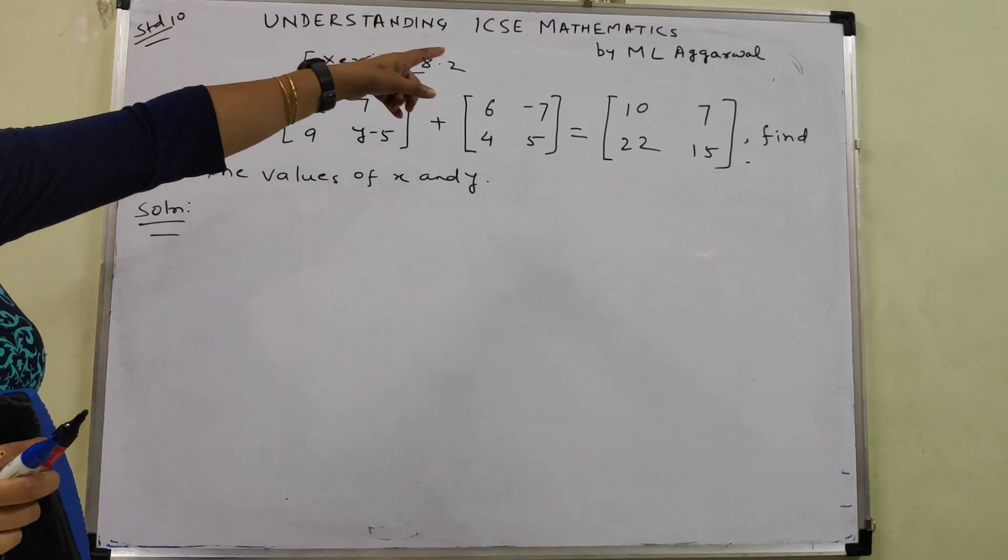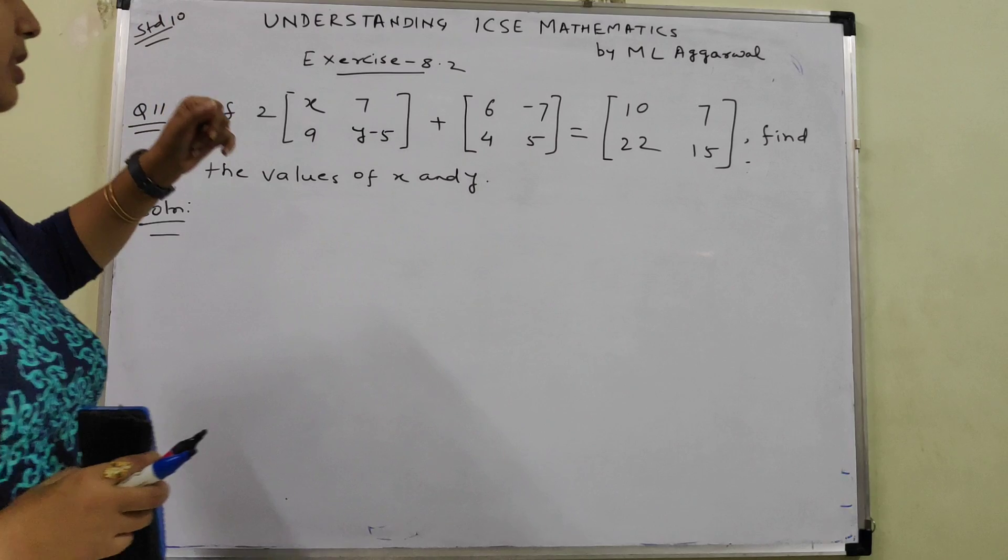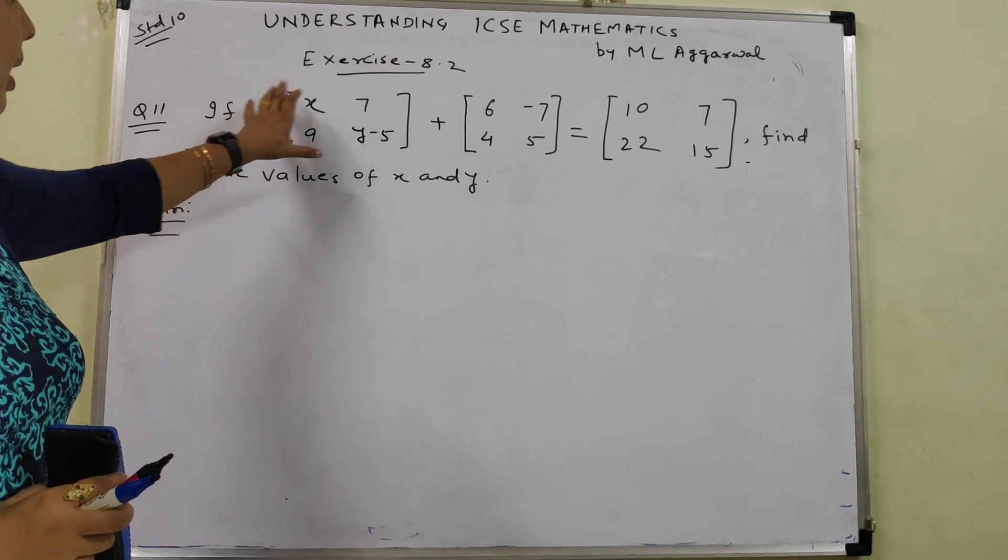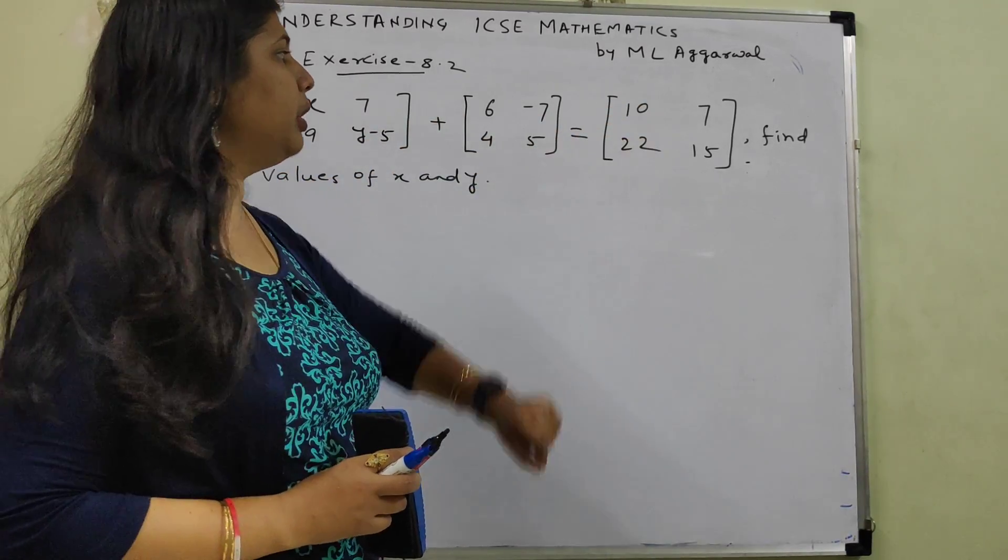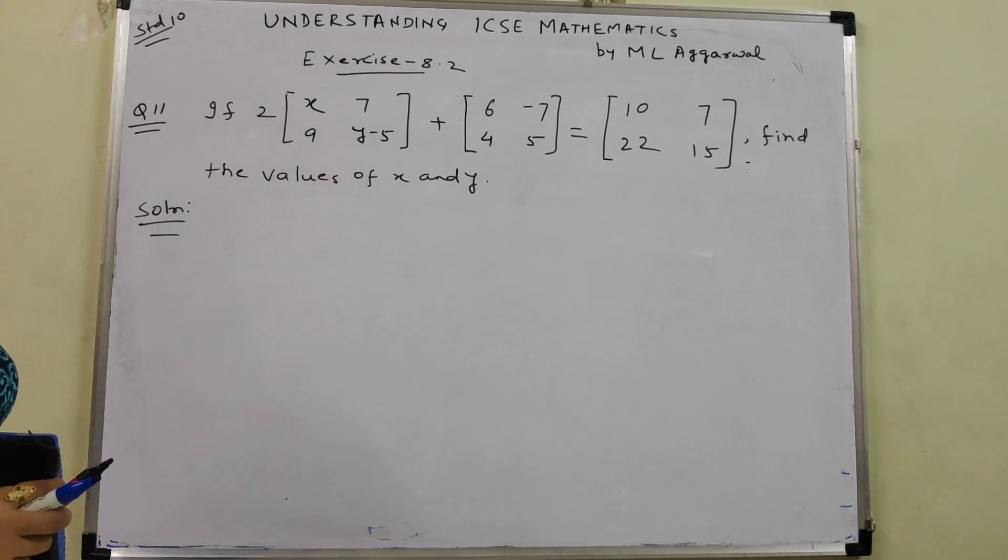Understanding ICSE mathematics by M.L. Aggarwal. So from ICSE board, question number 11 says if 2 multiplied with the matrix plus another matrix equal to one more given matrix, find the values of X and Y.